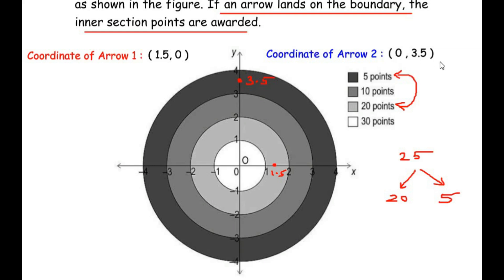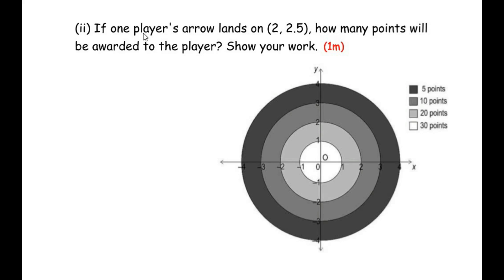Moving on to the second sub question: if one player's arrow lands on (2, 2.5), how many points will be awarded? The x value is 2 and the y value is 2.5. I have drawn a vertical line from x=2 and a horizontal line from y=2.5, and they meet at this point. As we can clearly see, it falls in the fourth section which will assign 5 points.